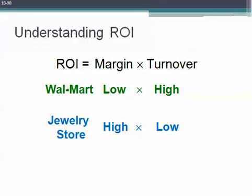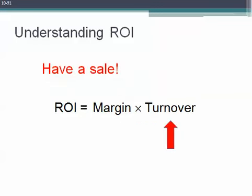One of the problems is that typically when we do something to try to improve turnover, we tend to hurt our profit margins. And when we do things to improve our profit margins, we tend to reduce our asset turnover. What would happen if we had a sale? If we have a sale, we're going to try to sell more merchandise, so our asset turnover — sales divided by assets — would increase because we still have the same amount of assets but are now selling more product. Typically, though, we have a sale by marking things down, and as soon as we mark down our prices, our profit margin decreases.